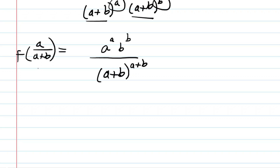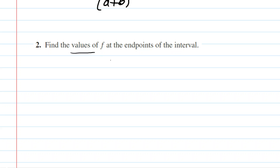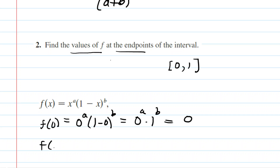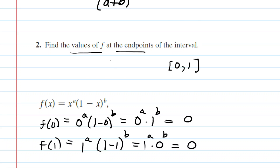This completes step one. Step two of the closed interval method tells us to find the values of our function at the endpoints of the interval, which were 0 and 1. For f of 0: we get 0 to the a times 1 to the b, and 0 to any power is 0, so f of 0 equals 0. For f of 1: we get 1 to the a times 0 to the b, which again gives 0. So f of 1 equals 0 as well.